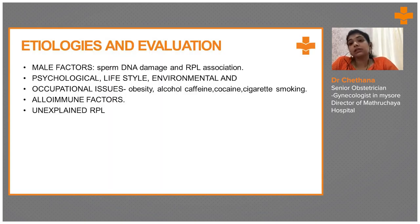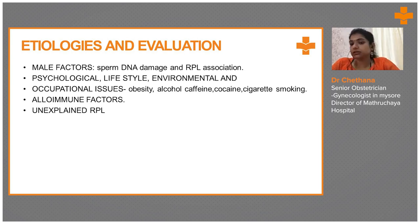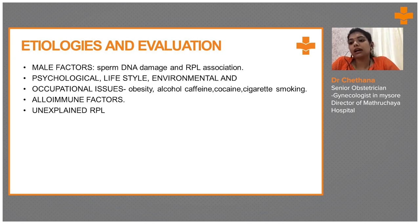Coming to male factors: it's not only the female who is responsible for recurrent abortions — even male factors come into play in patients suffering from RPL. They'll have sperm DNA damage. So we should investigate even the sperms for DNA fragmentation, which will be more in men whose wife is suffering from RPLs. Psychological, lifestyle, and environmental conditions also add to these conditions. Occupational issues like obesity, alcohol, caffeine, cocaine, smoking, and other addictive habits, as well as alloimune factors, are also implicated. And 40 to 50 percent of RPL is due to unexplained causes.